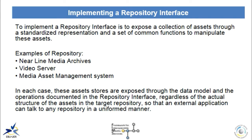To implement a repository interface is to expose a collection of assets through a standardized representation and a set of common functions to manipulate these assets. Examples of repositories include nearline media archives, video servers — which store a set of video files — and media asset management systems. In each case, these asset stores are exposed through the data model and operations documented in the repository interface, regardless of the actual structure of the assets in the target repository, so that an external application can talk to any repository in a uniform manner. This is what FIMS is all about.